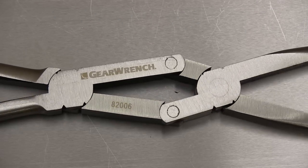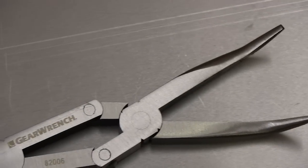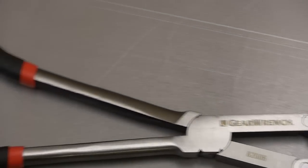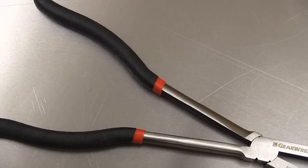But what really makes these pliers different is this compound pivot system. That means with the jaws open fully, the handles aren't separated nearly as much as with the regular type of pliers, and that lets you work in smaller access holes.